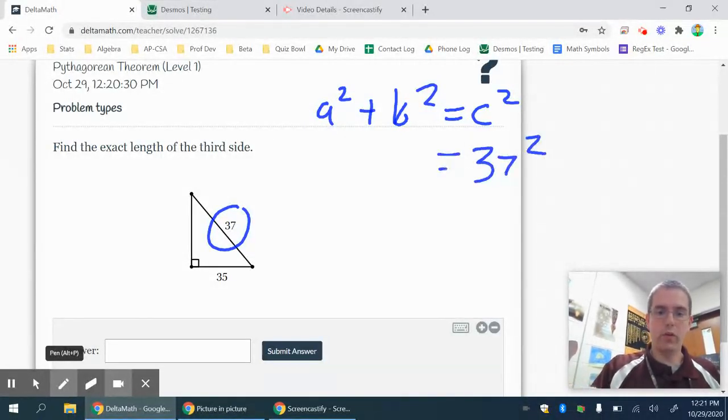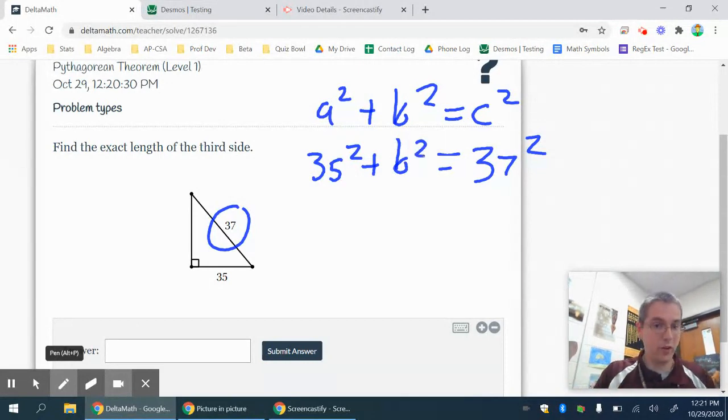And it doesn't really matter what you pick for A and B. I usually put the one that looks a little shorter in as A, and the other one is B, and C is hypotenuse, the longest one. But how you set that up doesn't matter.